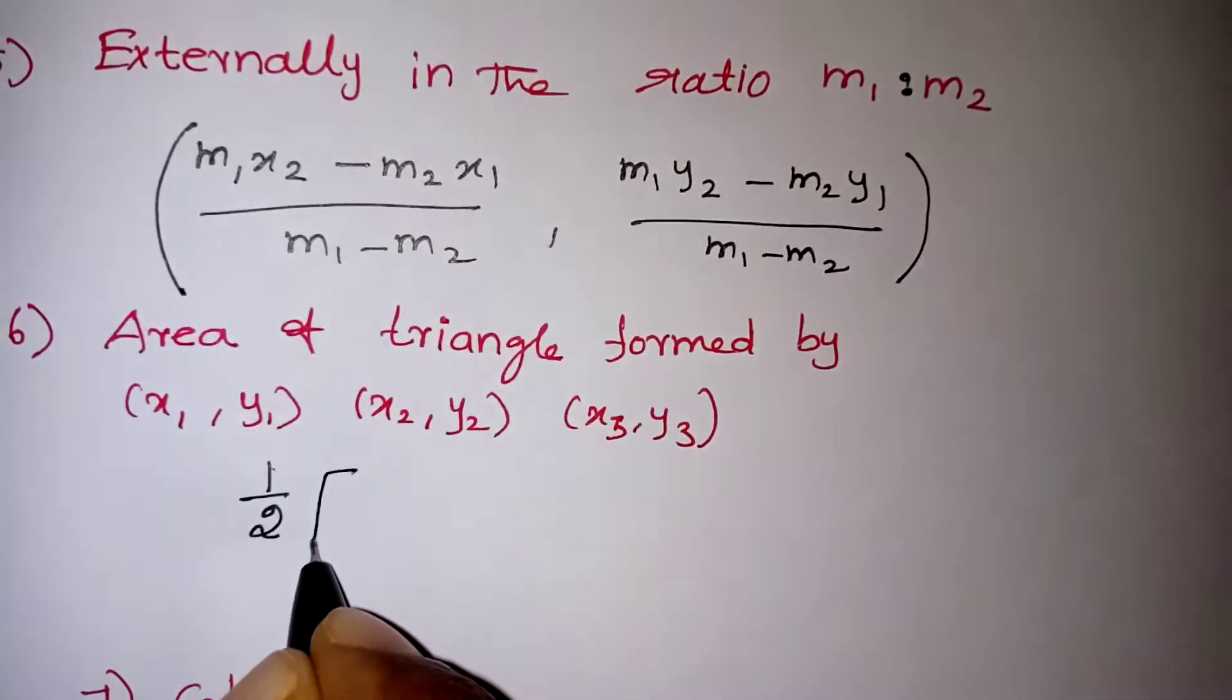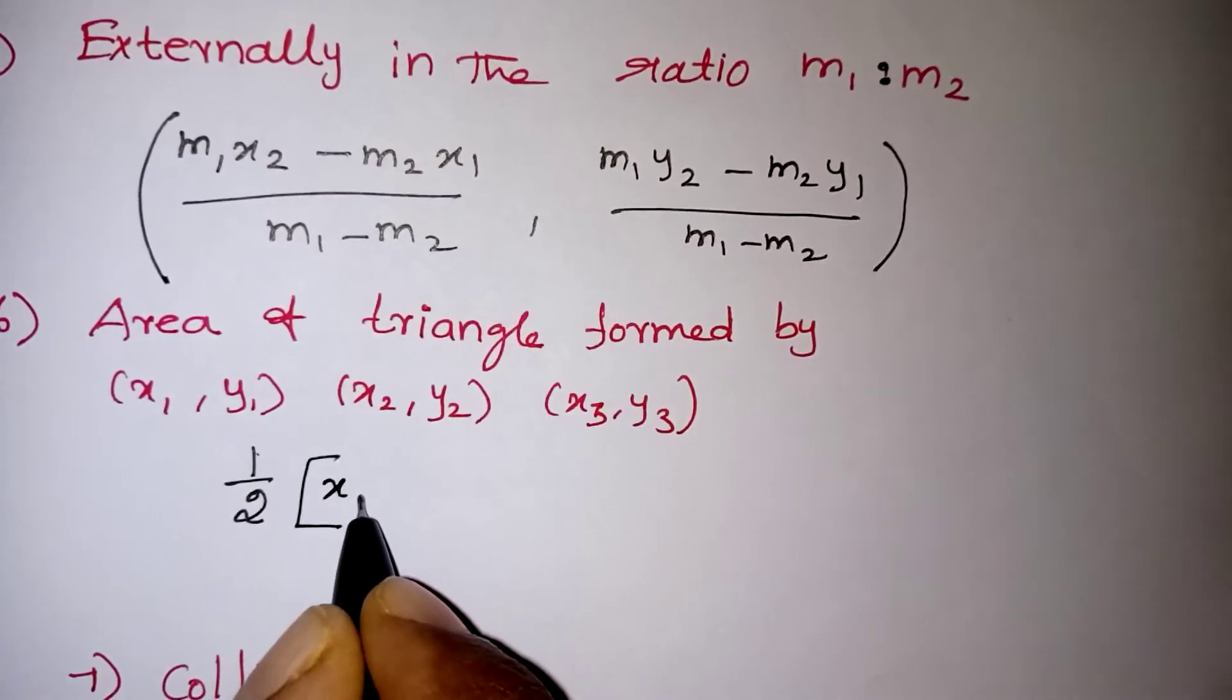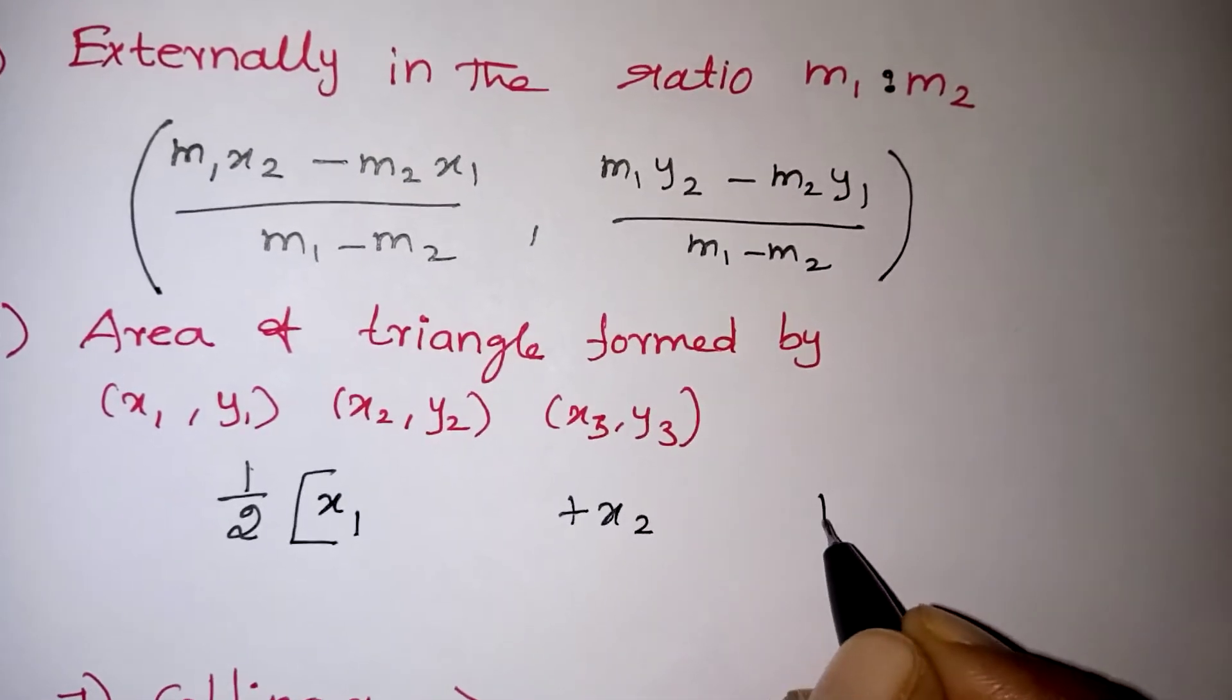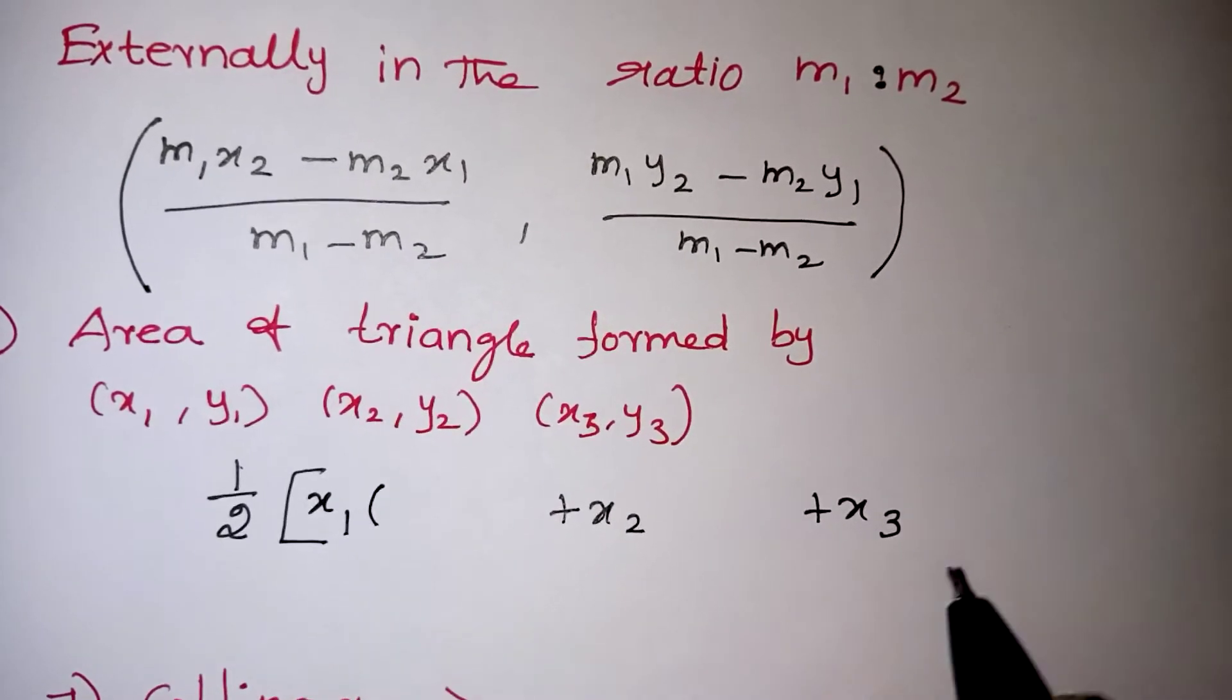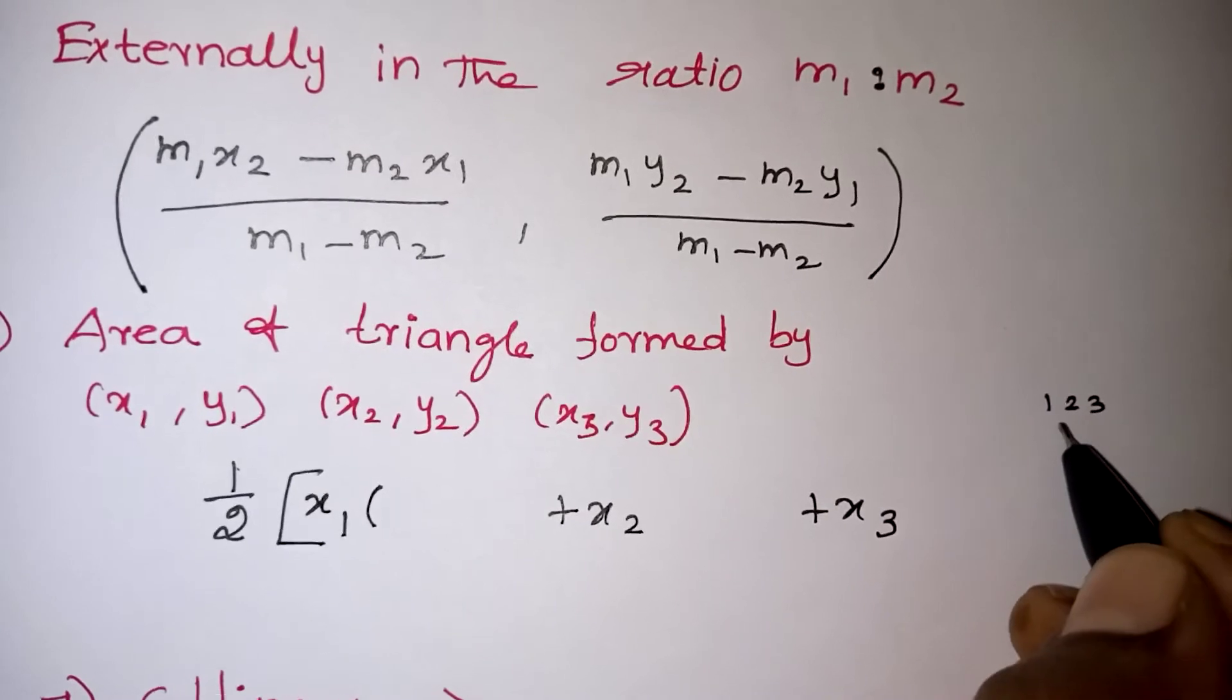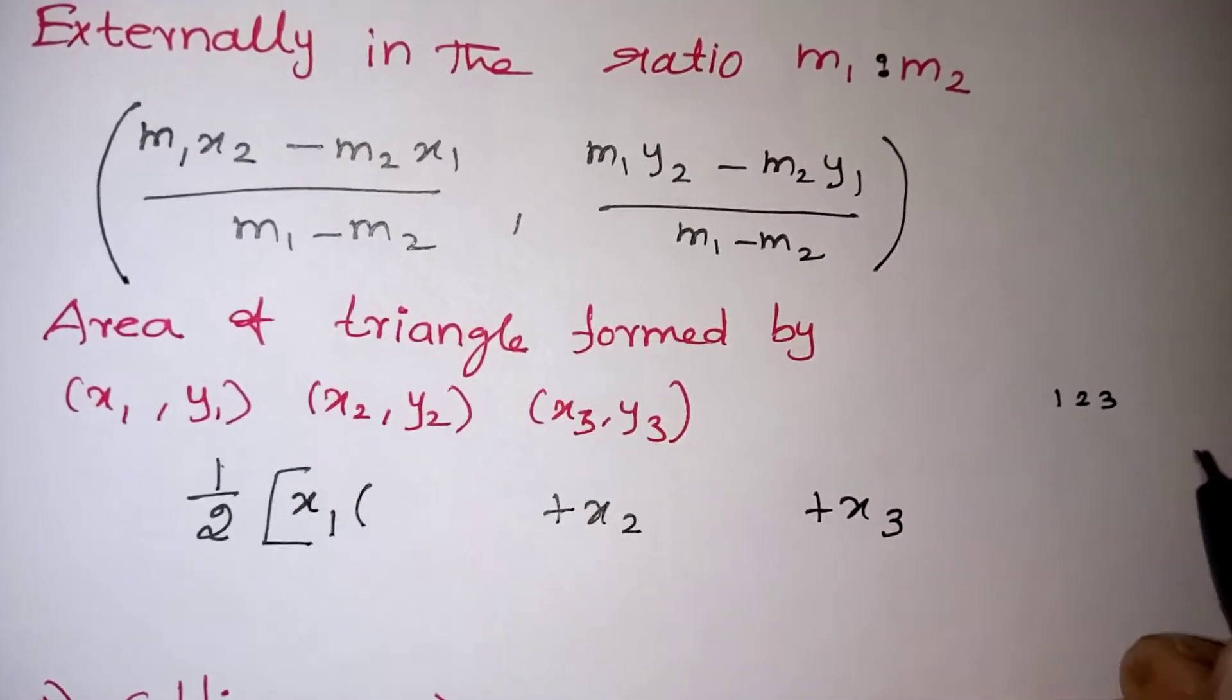First, let us write all the x values. For example, first we have to write, anyway first x1, after some terms here it will be x2, then it will be x3. Here it will be the multiplication value. Children, you just keep it in mind, 1, 2, 3. This is the order. 1, 2, 3. If 3 comes again, 1, 2, 3. Like that we have to take.